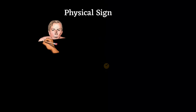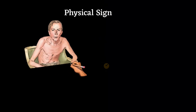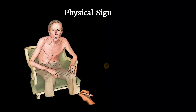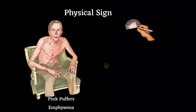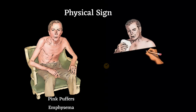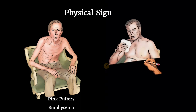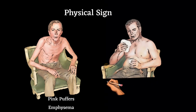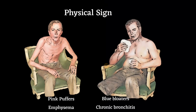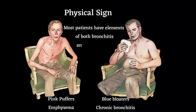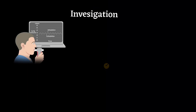Although traditional teaching is that patients with predominant emphysema — termed 'pink puffers' — are thin and non-cyanotic at rest with prominent use of accessory muscles, and patients with chronic bronchitis are more likely to be heavy and cyanotic — 'blue bloaters' — current evidence demonstrates that most patients have elements of both bronchitis and emphysema. The diagnosis requires objective demonstration of airflow obstruction by spirometry.